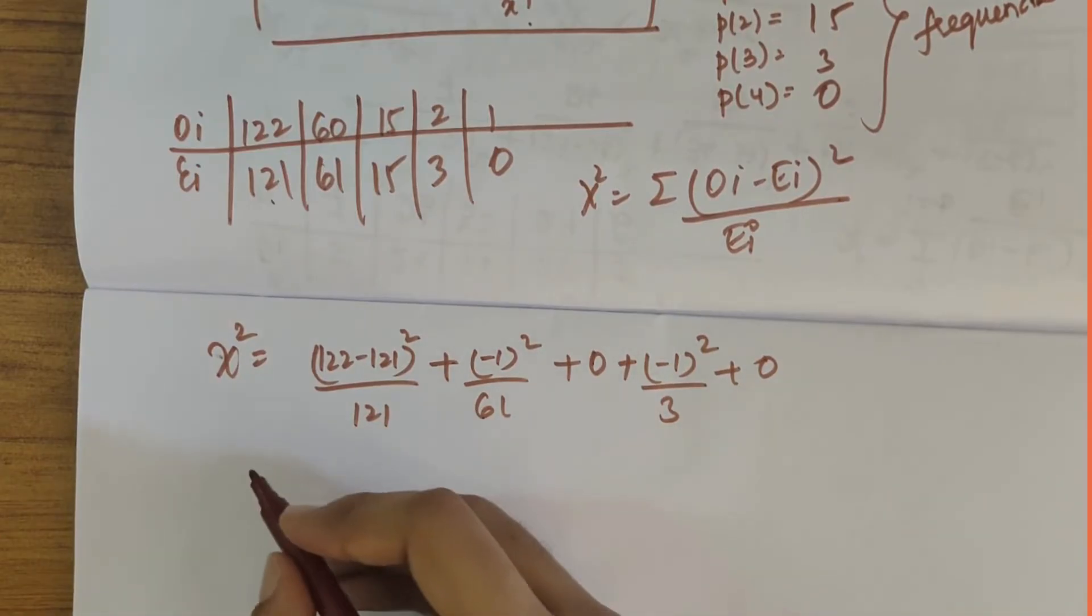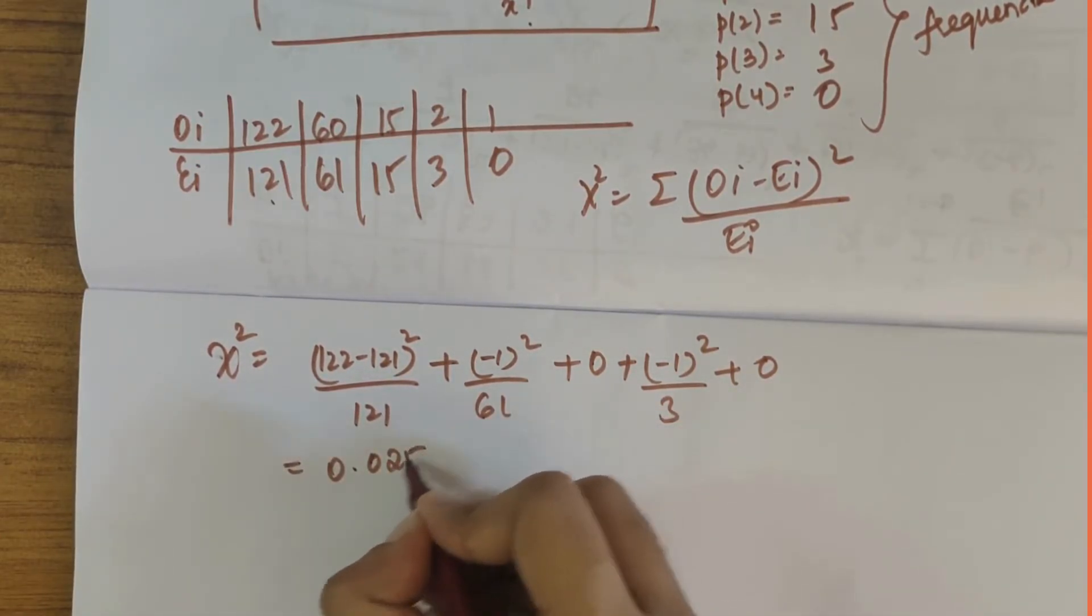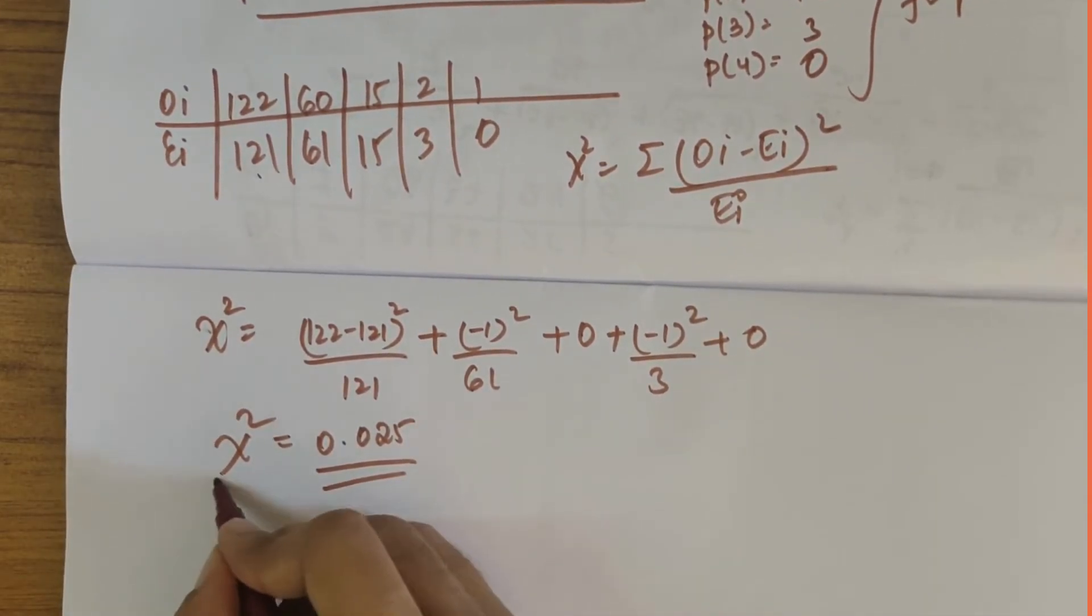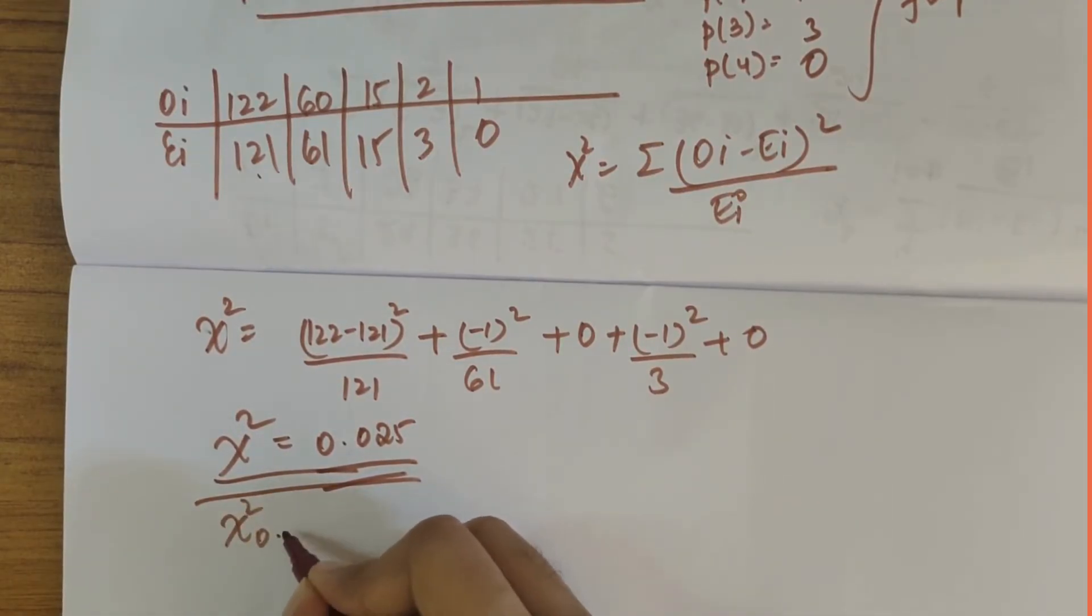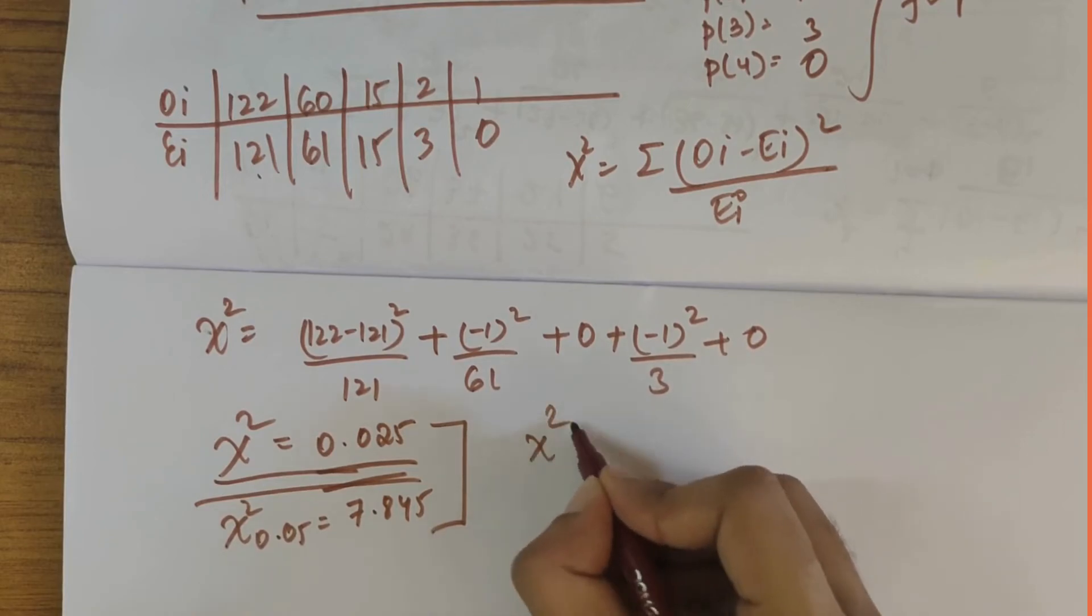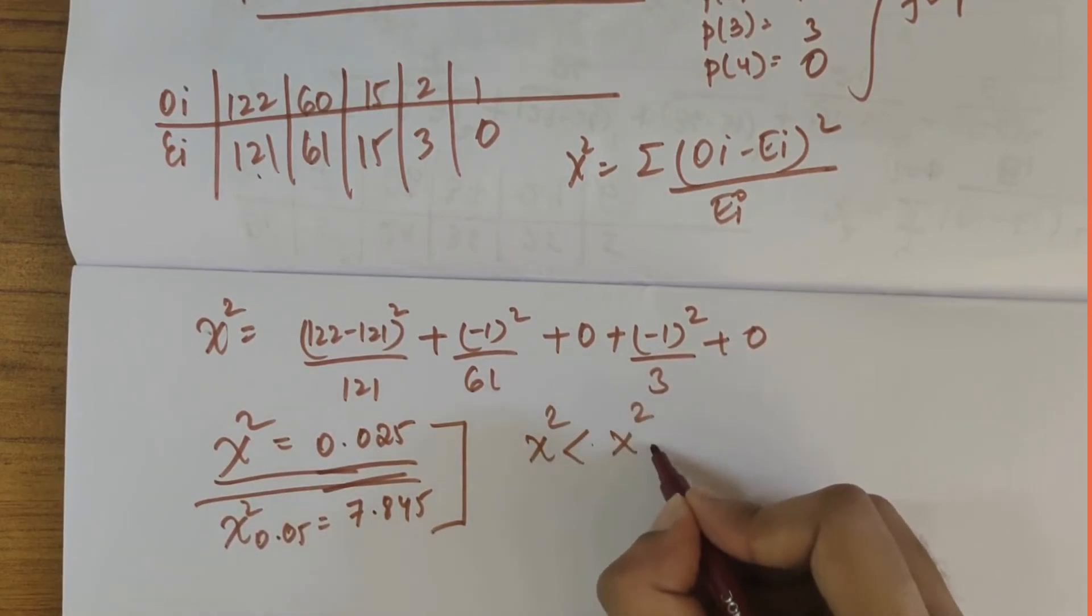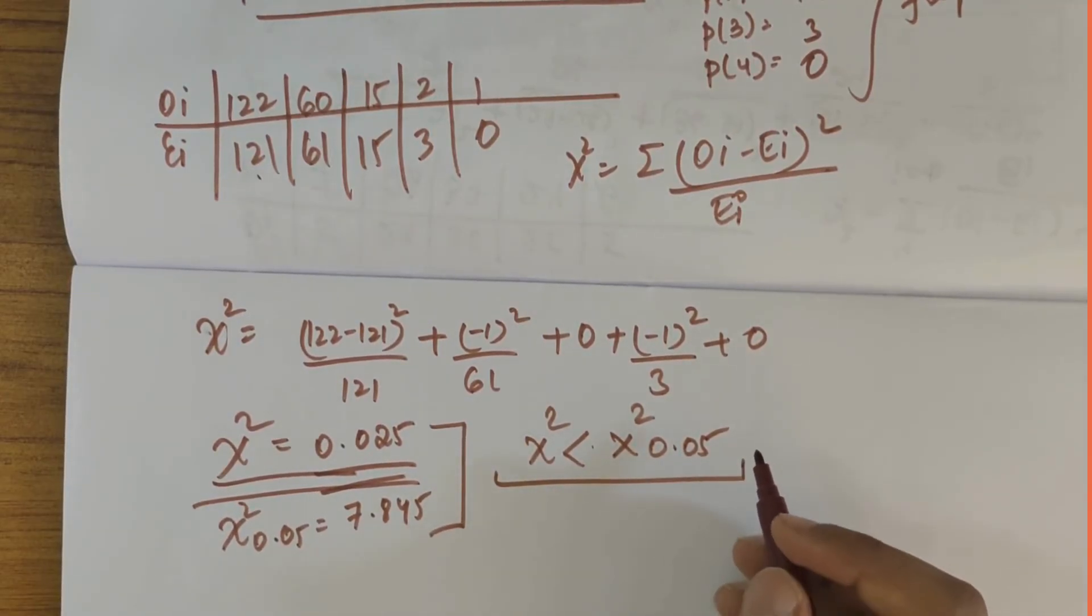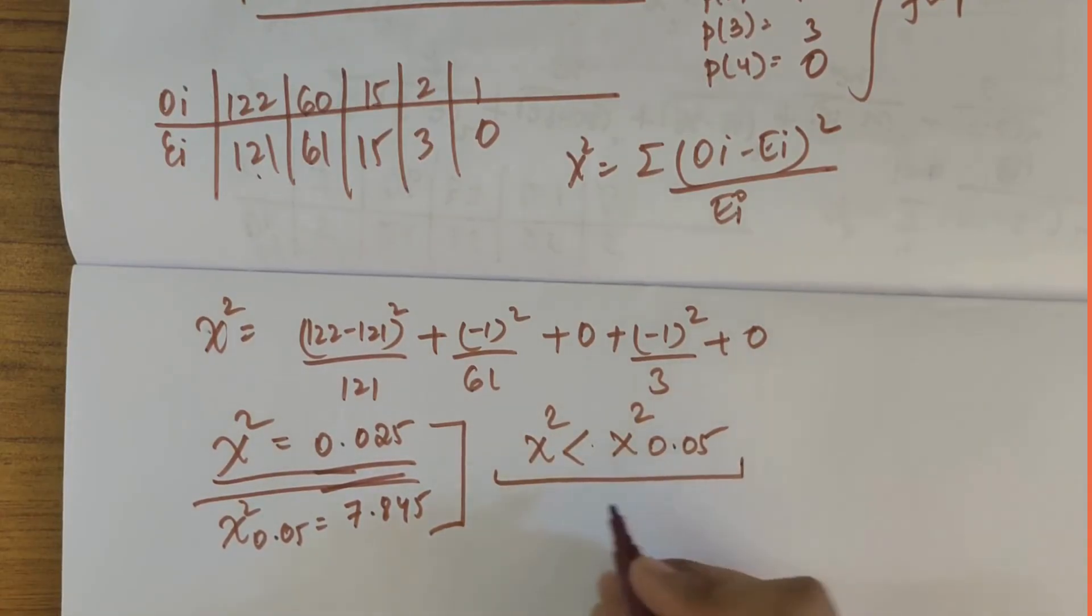Solving this further, if you solve this you get the answer as 0.085. The chi-square value is 0.085. The obtained chi-square value is 0.085 and the chi-square which they had given was 7.815. So here we can make out that chi-square is less than chi-square of 0.05. In this case, the fitness is good or the hypothesis is accepted.